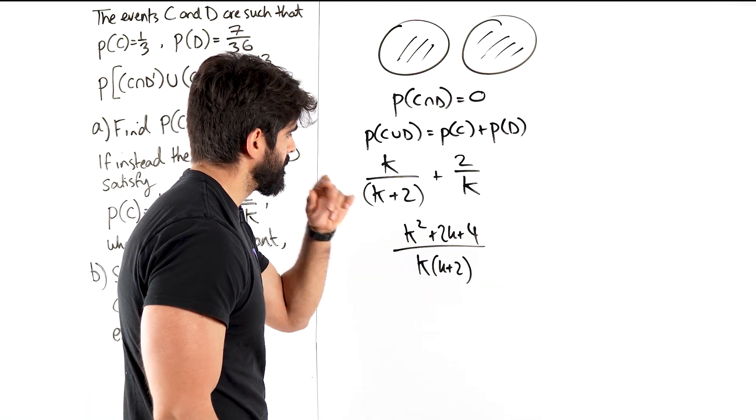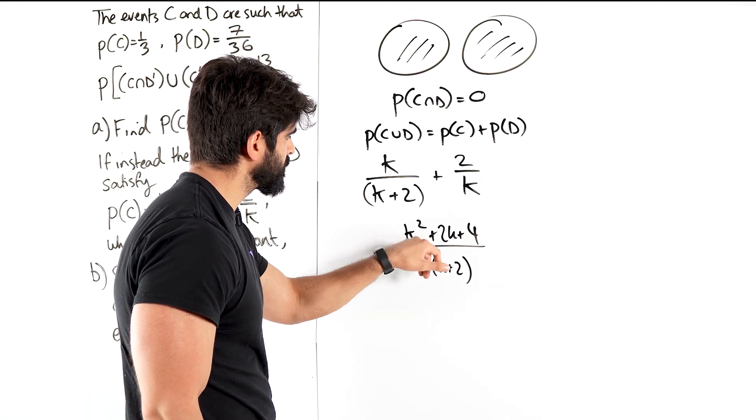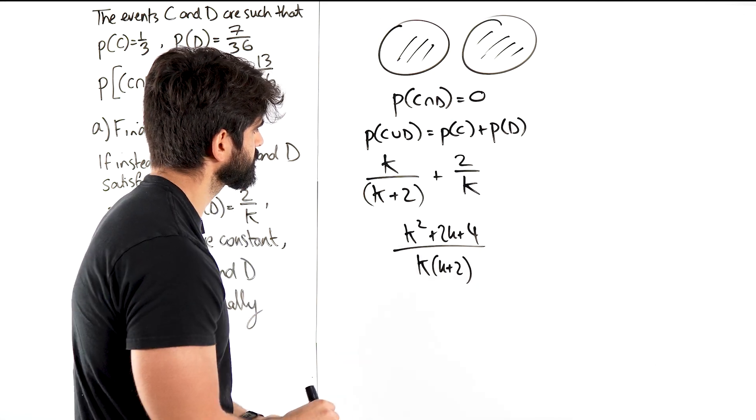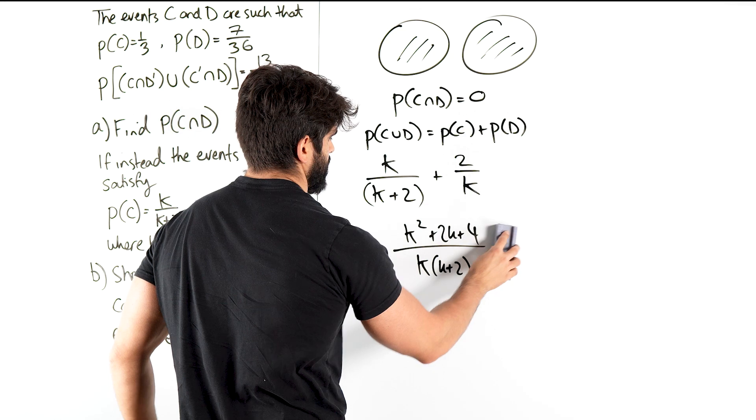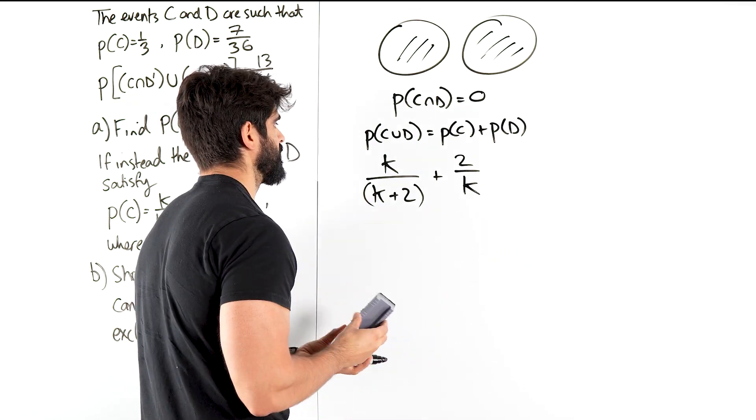Now we're kind of already there. Now that K plus 2, I basically see it. If I rewrite this, instead of expanding it, so if I didn't expand it, maybe we could have done something else.